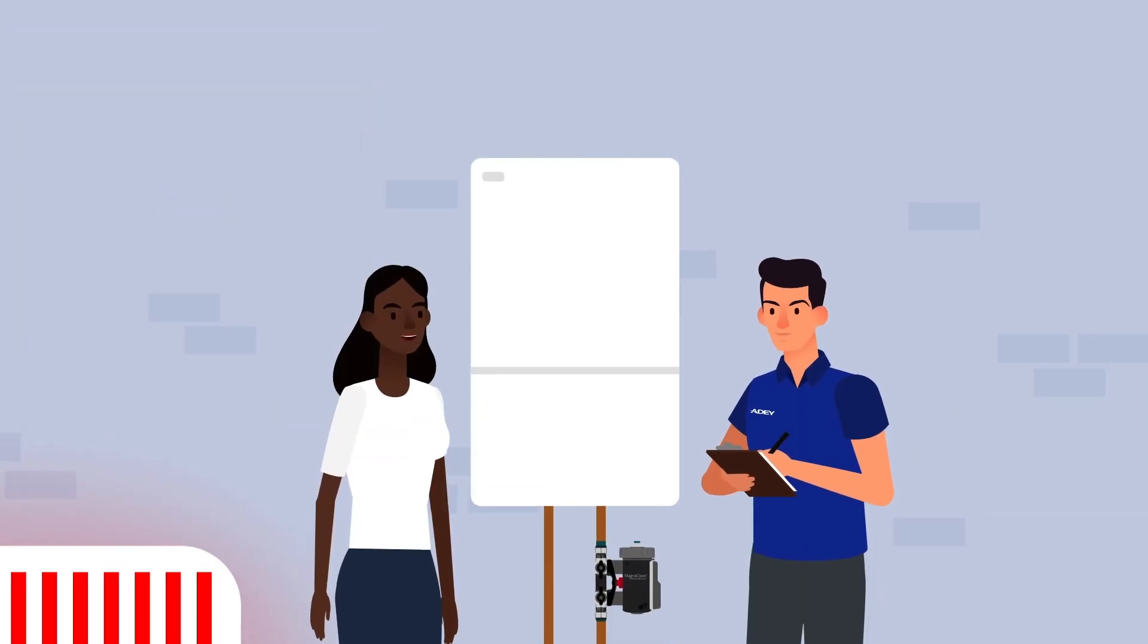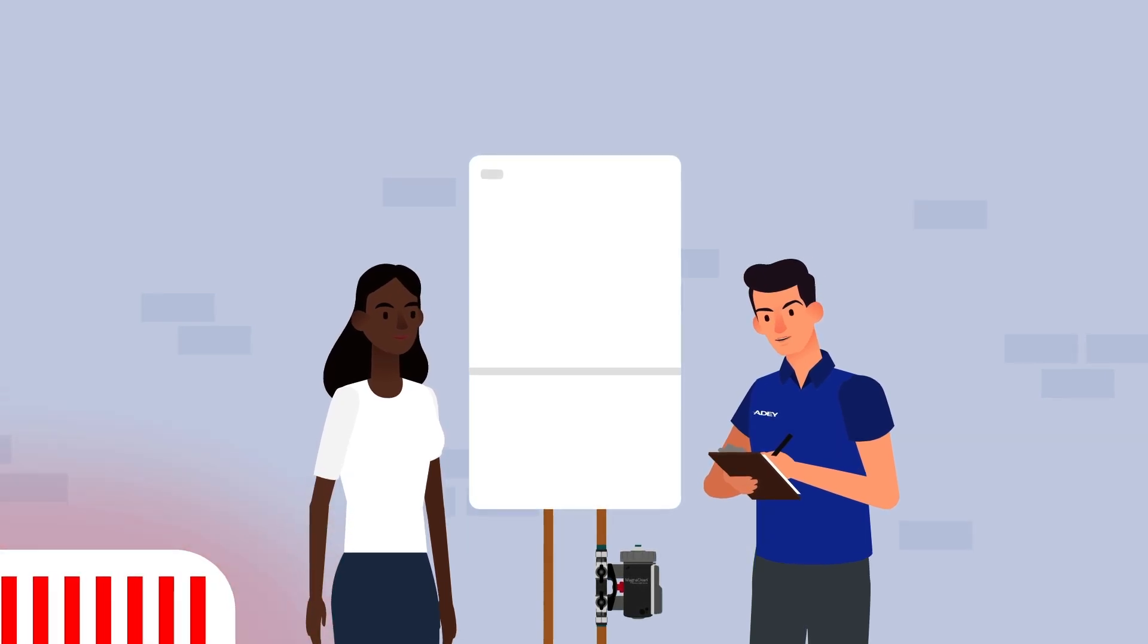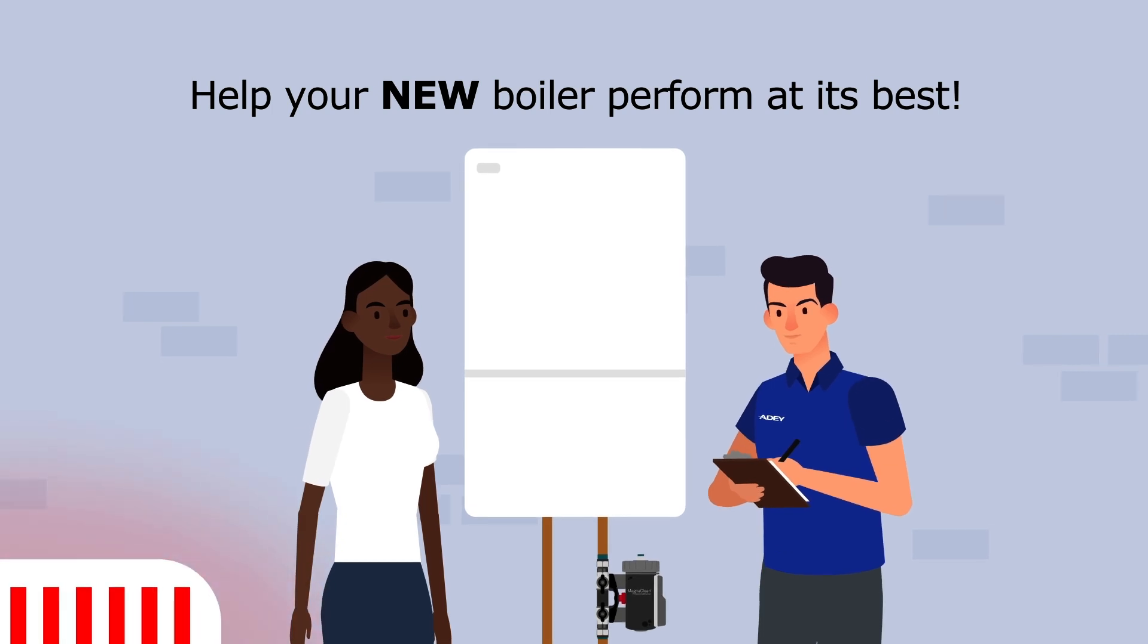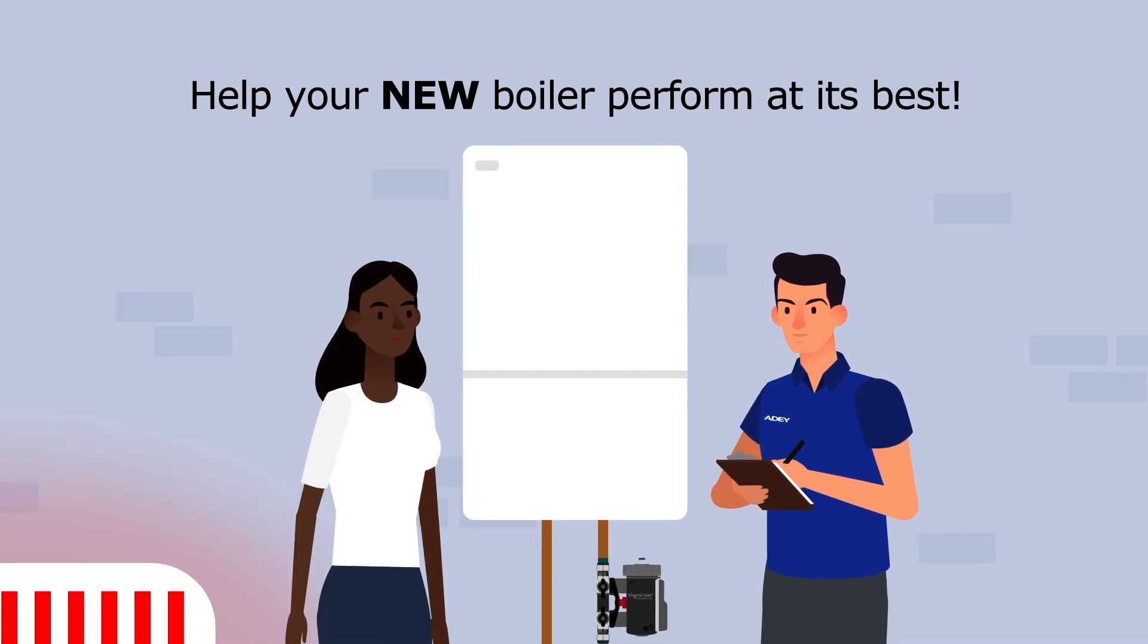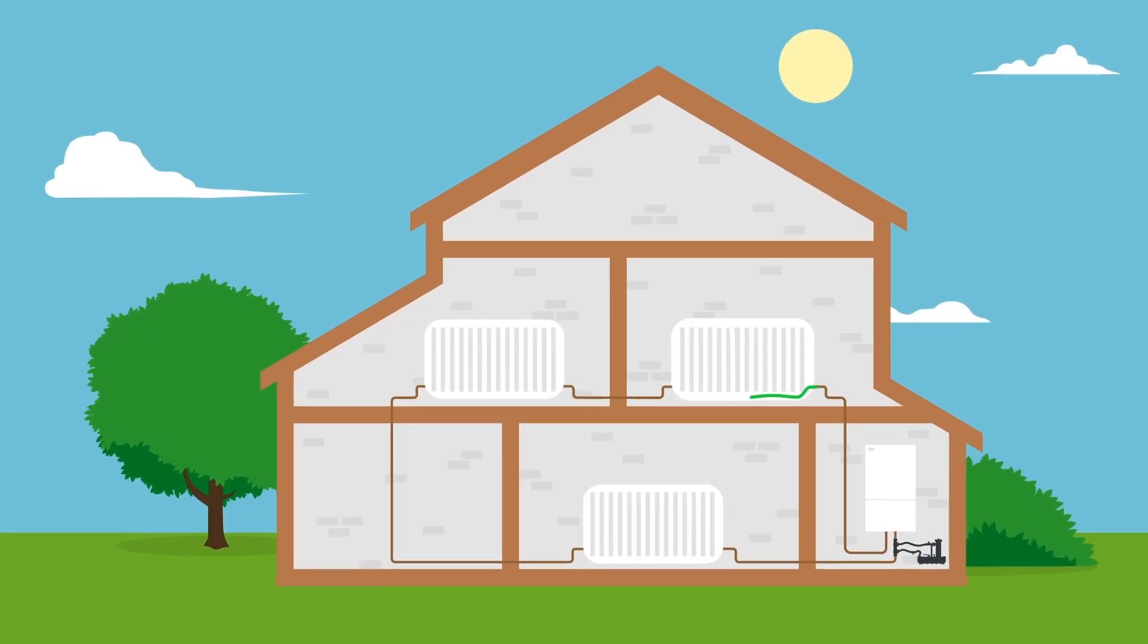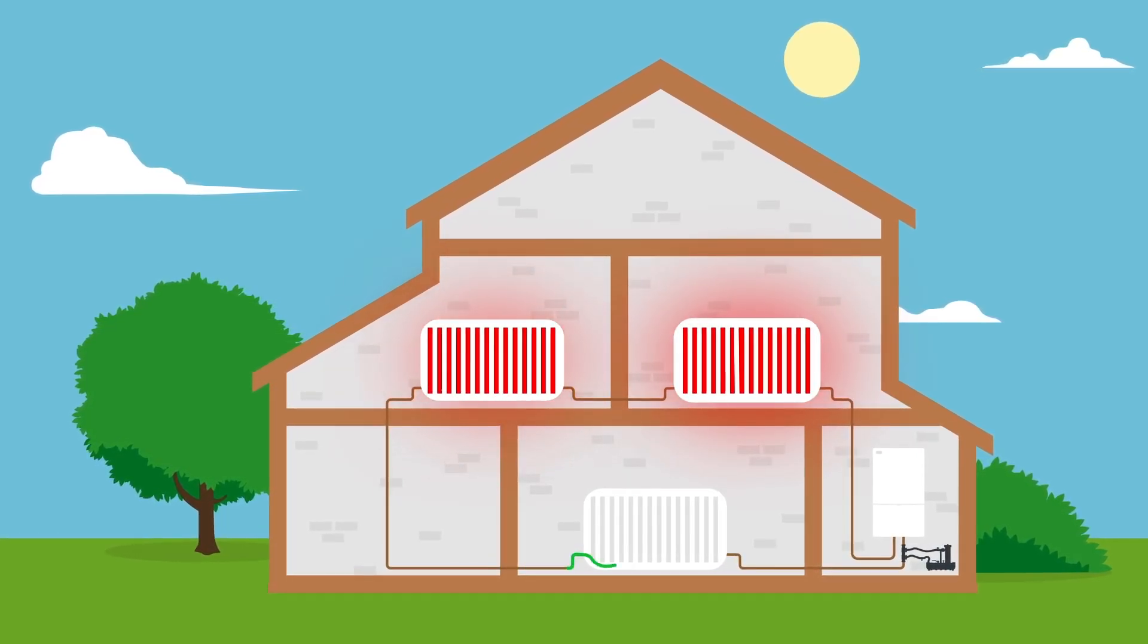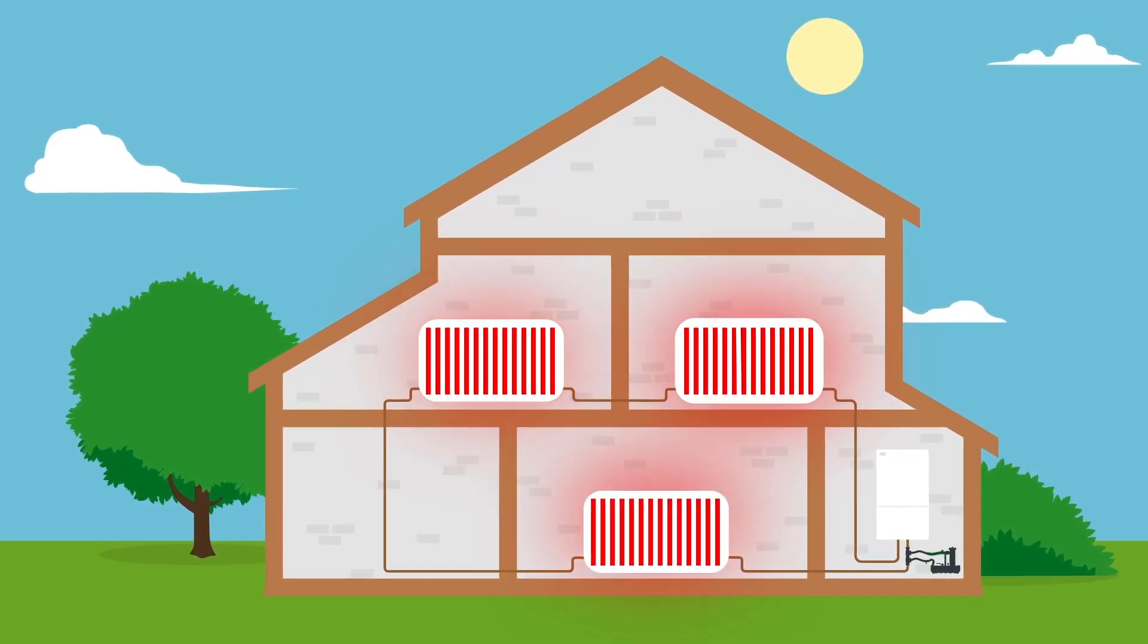And if you're having a new boiler fitted, a MagnaClean system clean is essential to keeping your heating working at its best. After all, you wouldn't put old oil in a new car. And now that your system is free from virtually all sludge, your engineer will protect future buildup of sludge and limescale by adding an inhibitor, helping to extend the life of your system.